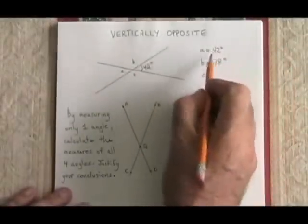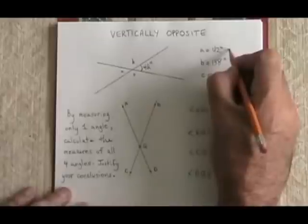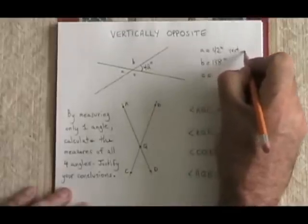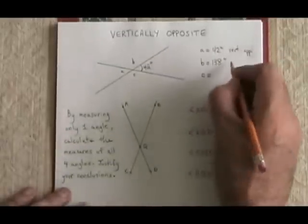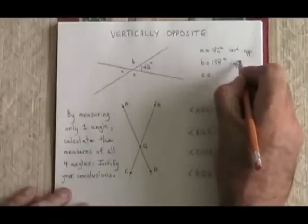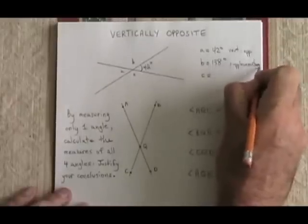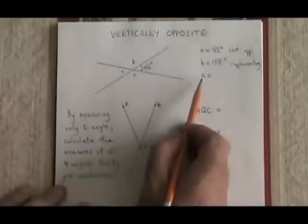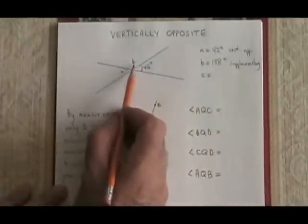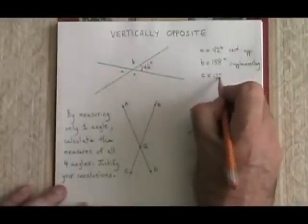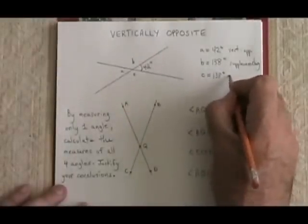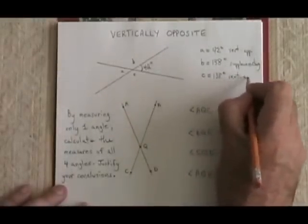We proved that angle A was 42 degrees using the vertically opposite rule. Then we proved that angle B was 138 degrees using the supplementary rule. Angle C is vertically opposite to angle B, so angle C must also be 138 degrees, and we got that by using the vertically opposite rule.